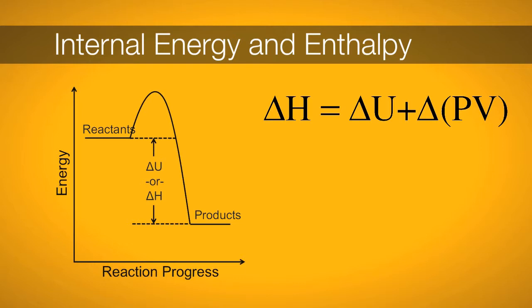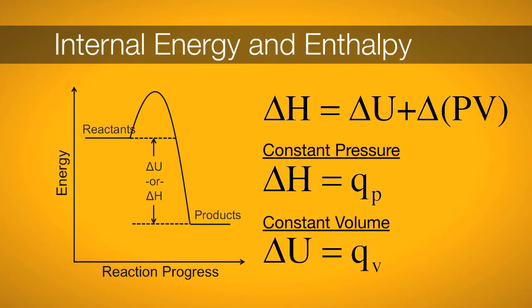Useful relationships are found by fixing conditions. In a constant pressure experiment, delta H equals QP, the heat at constant pressure. If a constant volume is applied instead of pressure, delta U equals QV, the heat at constant volume.